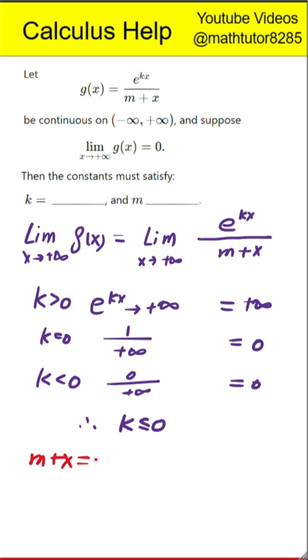The only possible discontinuity occurs when the denominator m plus x equals zero, that is when x equals negative m. To avoid discontinuity, this denominator must never vanish for any real x.